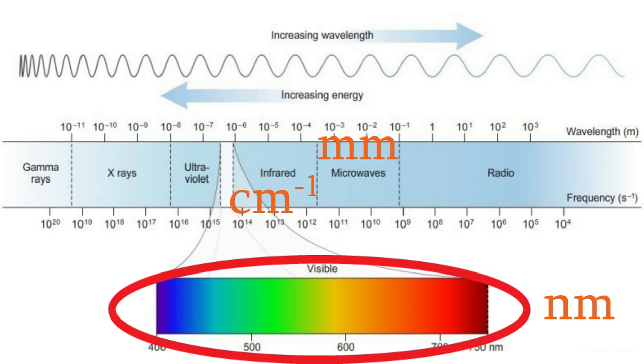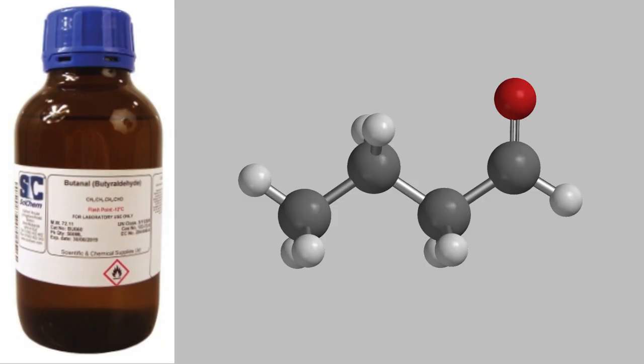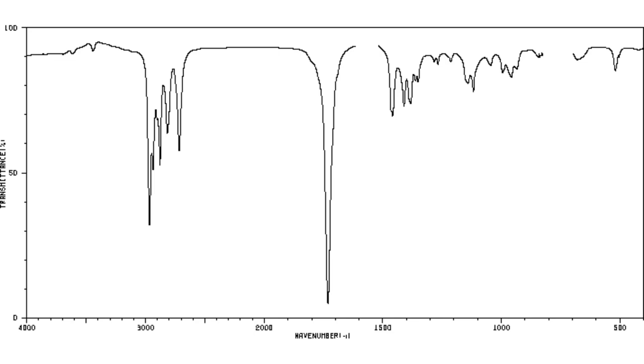For example, suppose we're interested in the molecule butanil, and we want to know more about the stretching vibration that occurs in the carbon-oxygen double bond. So, we take an IR spectrum, and we find out that the carbon-oxygen stretch occurs with a frequency of 1731 reciprocal centimeters. What would be the wavelength, frequency, and energy in SI units?